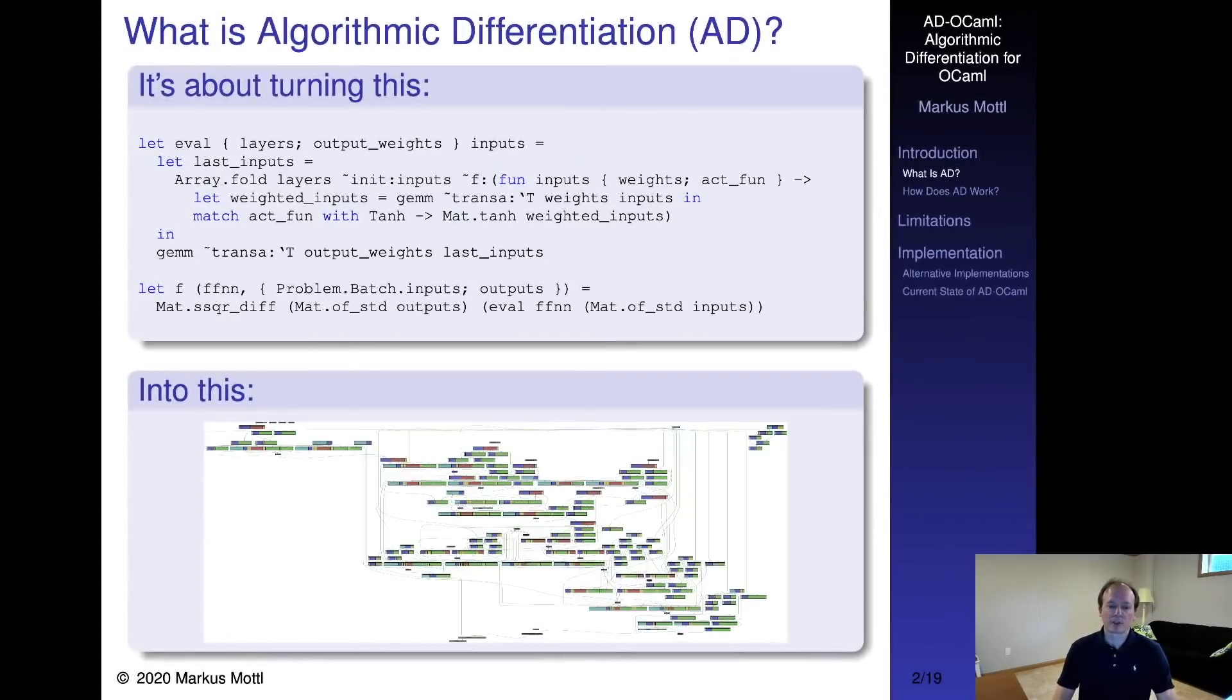So what is algorithmic differentiation? It's basically about turning a computer program provided by the user into another program that augments it with mathematical derivatives. Due to the nature of some of these transformations, this may possibly also improve the program's efficiency or introduce parallelism. This is depicted in the computational graph below, which was automatically generated from the given user program, turning a simple feed-forward neural network into an implicitly parallelized backpropagation network.